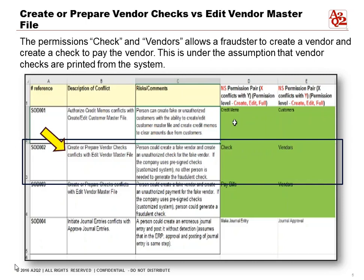If a person has the ability to print a check and create a vendor, they can create a fake vendor and an unauthorized check. This is especially dangerous if the company uses pre-signed checks or signature stamps, because no one would be able to detect that fraud occurred if the fraudster were able to do both of these things. In NetSuite, the permissions check and vendors allow a person to create a vendor and create a check to pay the vendor.